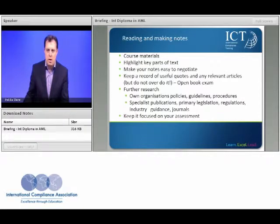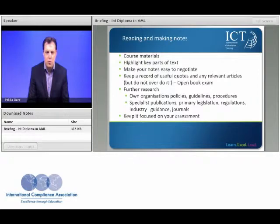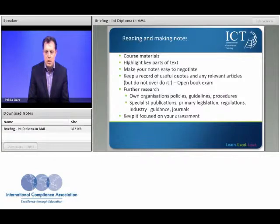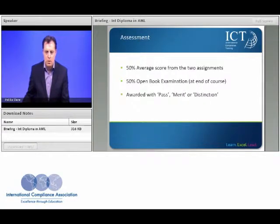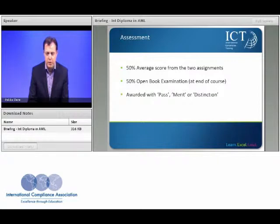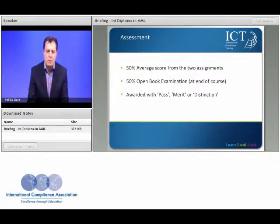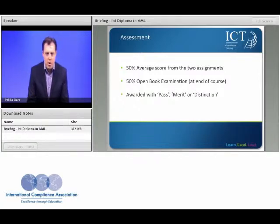A key aspect of the course will be your own reading, note-taking, and independent research. We will provide further reading and research materials to develop your knowledge, and encourage you to look at your own organisation as well as primary legislation, industry guidance, and research into the subject matter. The overall pass mark for the course is 50%, with half the marks resting on the two assignments and the remaining 50% on the exam. The programme can be awarded with a pass, merit, or distinction grade.